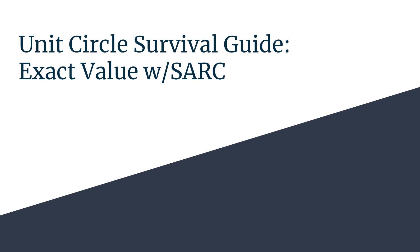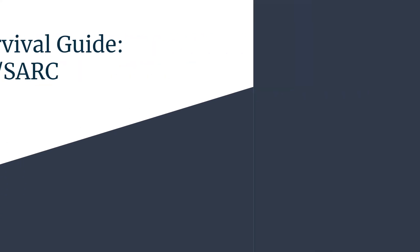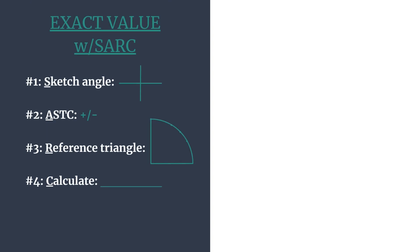In this unit circle survival guide, we'll find the exact value of cotangent of negative pi over 6 using SARC. SARC is just a quick acronym to help keep all the information organized that is necessary when finding an exact value.